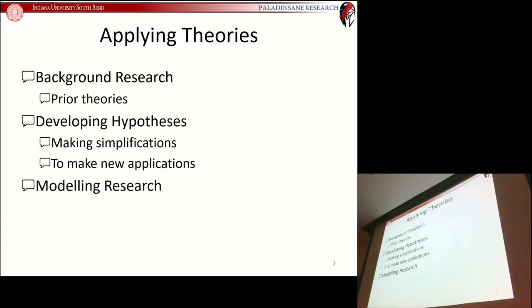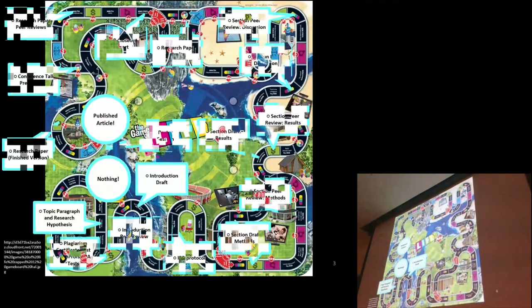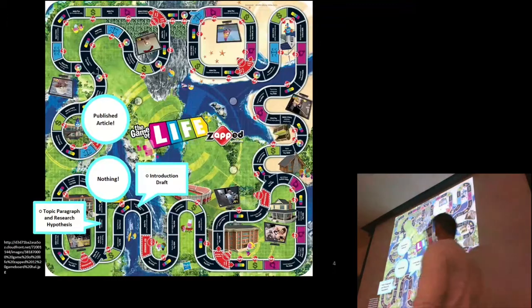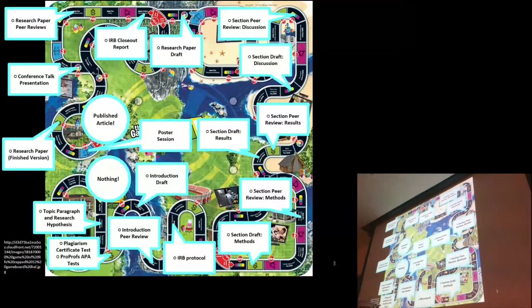We'll look at what techniques we can use, such as making simplifications, to apply theories in order to make new applications. Then we'll look at modeling research — how you can use ideas from other people to do the things you want to do. In terms of our course progression, today we're looking at skills needed for the topic paragraph, research hypothesis, and the introduction draft. Also be sure to complete your plagiarism certificate test and upload it, along with the ProProfs APA test.